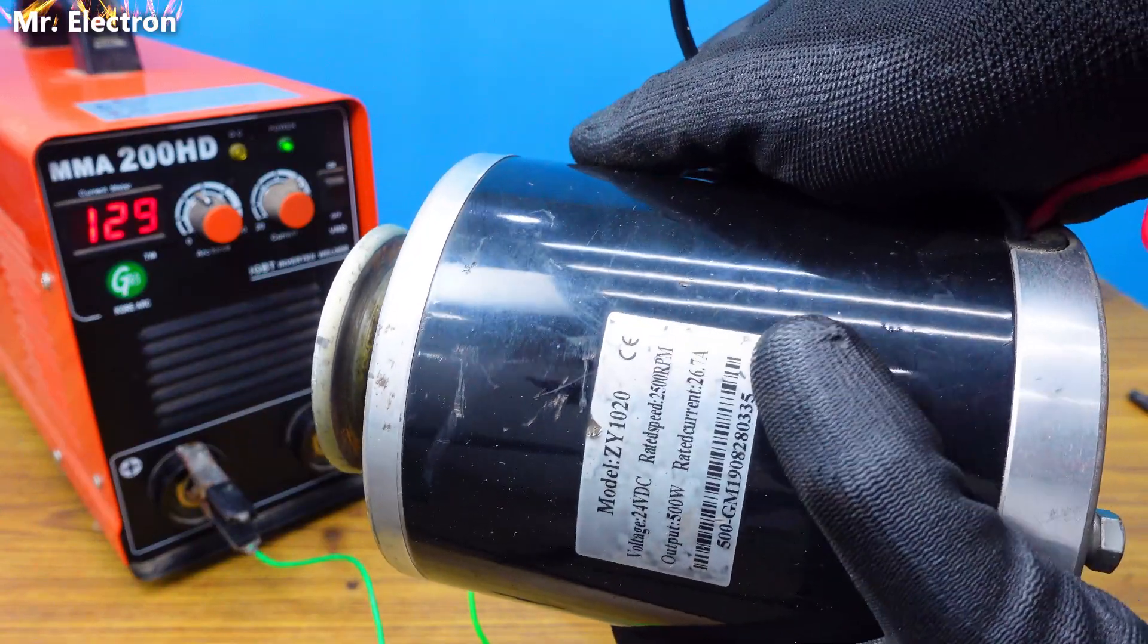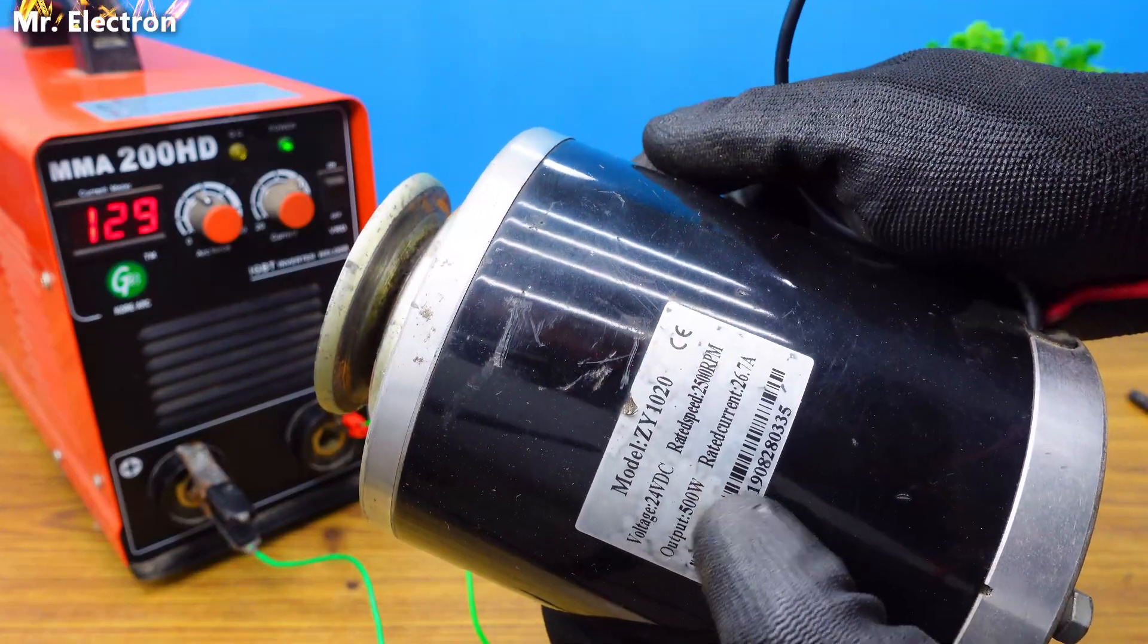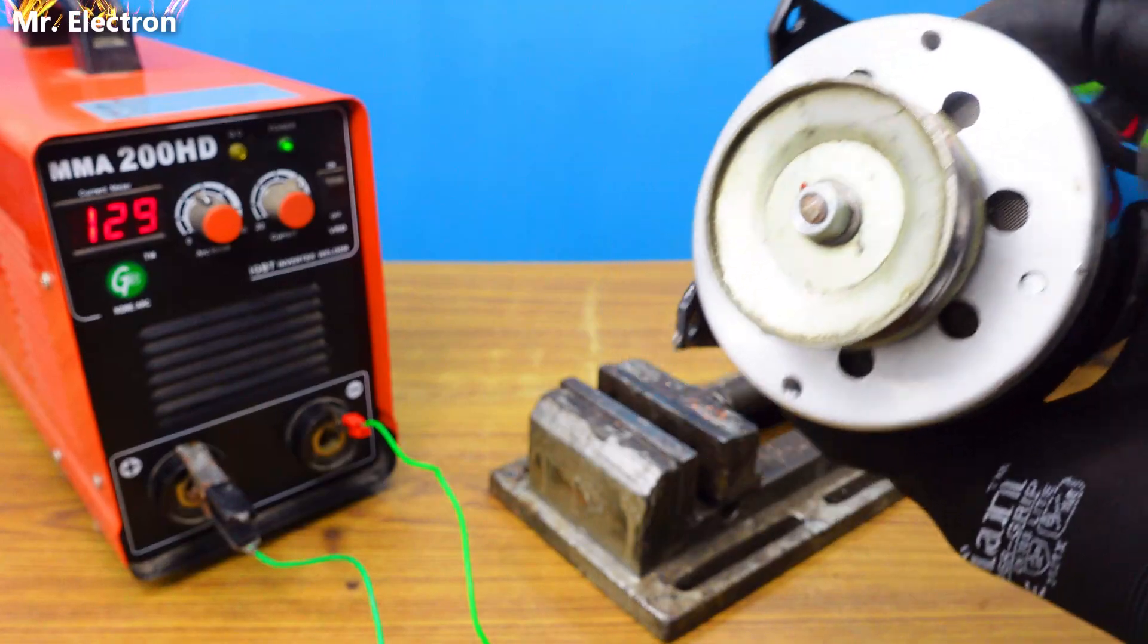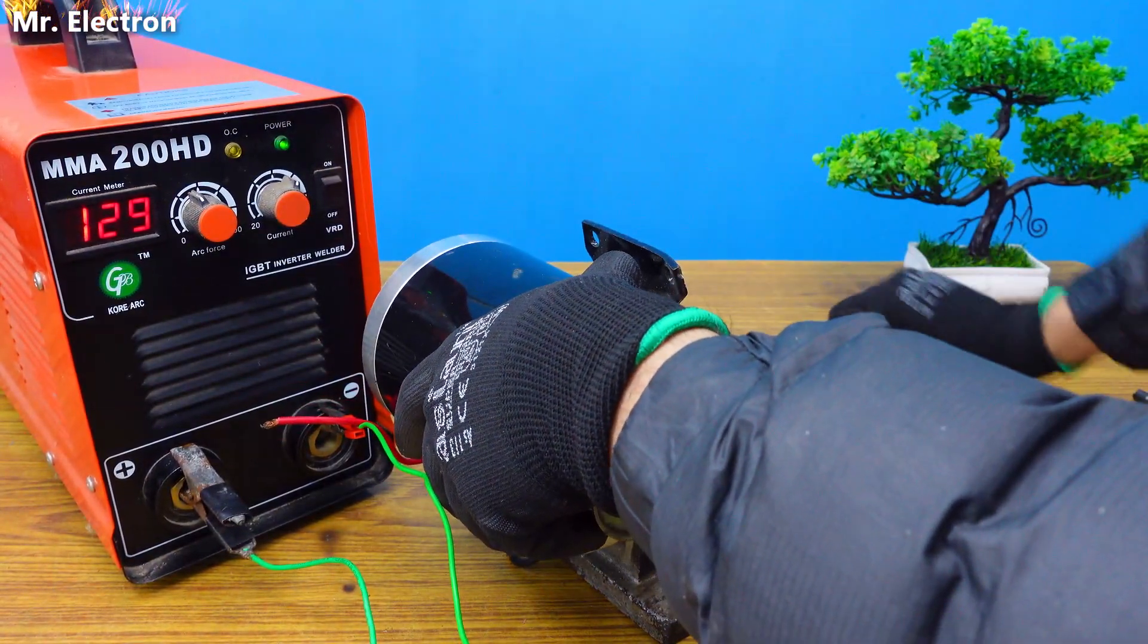Now this is a 26.7 amps, 24 volts, 500 watts permanent magnet DC motor with four brush system - that is for high current motors - and it's for an e-bike.